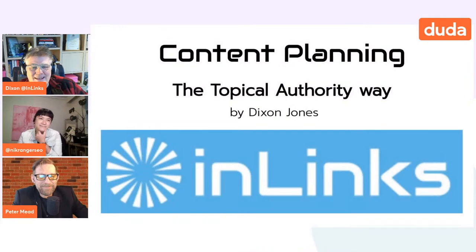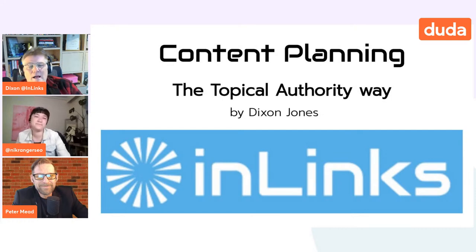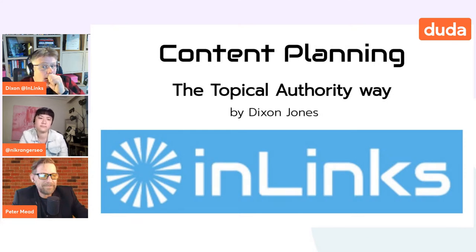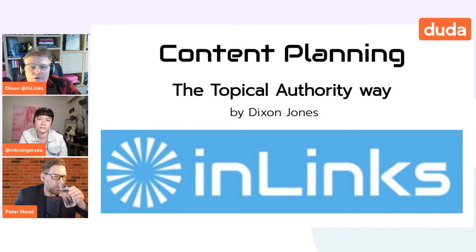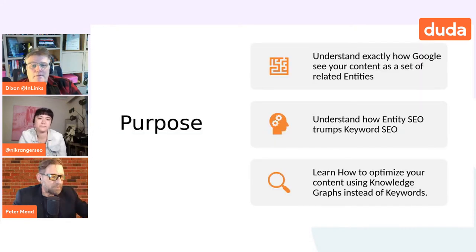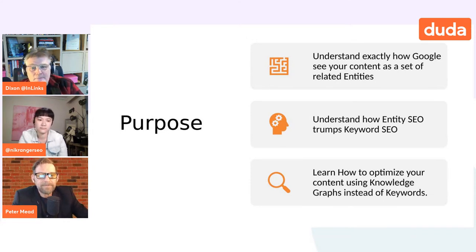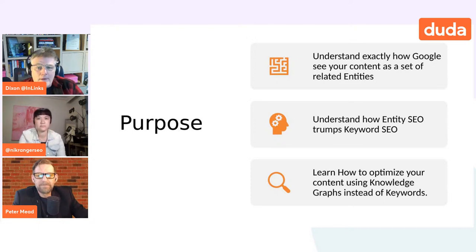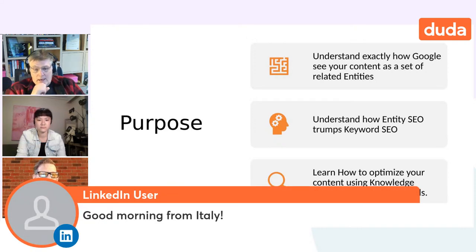Can we dive into my slides? We're going to be talking about a different way of looking at content planning — or as most people call it, keyword research. I'm calling it content planning. By the time we get to the end of this, it's not so appropriate to call it keyword research. The purpose of what I've got here today is to help people understand exactly how Google sees content as a set of entities and related entities, and how entity SEO — planning from an entity basis instead of a keyword basis — is better.